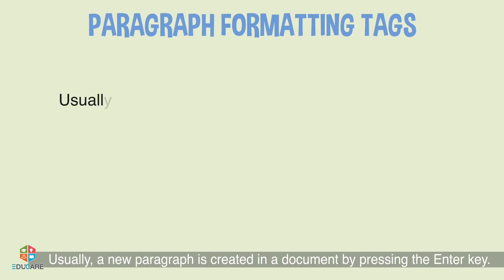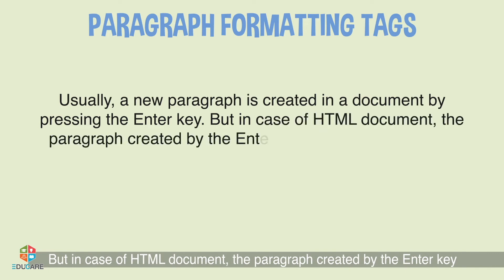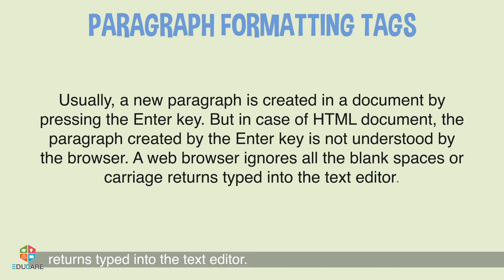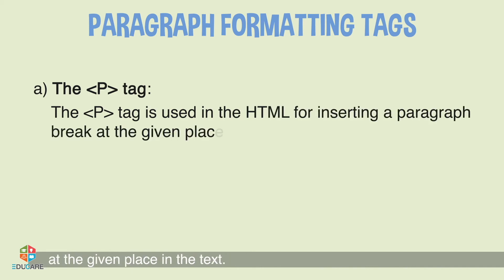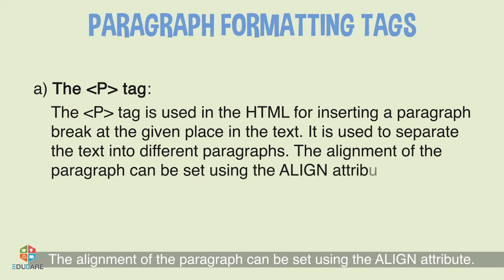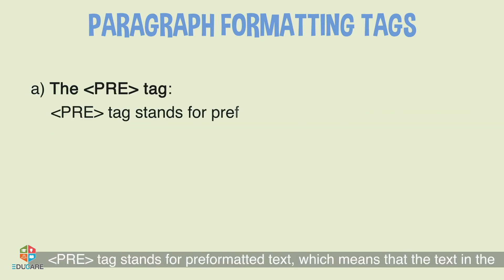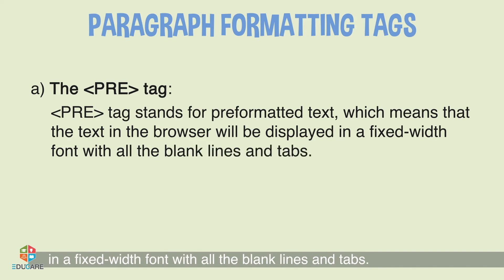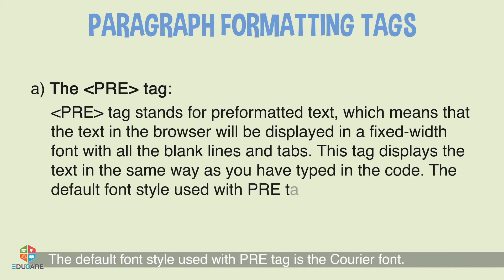Paragraph Formatting Tags: Usually a new paragraph is created by pressing Enter, but in an HTML document the browser ignores all blank spaces or carriage returns typed in the text editor. The P tag is used in HTML for inserting a paragraph break at a given place in the text, to separate text into different paragraphs. The alignment can be set using the align attribute: left, right, or center. The Pre tag stands for pre-formatted text, meaning text is displayed in a fixed-width font with all blank lines and tabs preserved, exactly as typed in the code. The default font used with the pre tag is Courier.